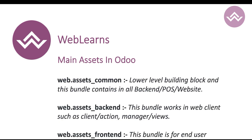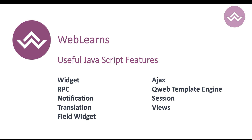There are three main types of assets available in Odoo. The first is assets_common, the second is assets_backend, and the third is assets_frontend. Common assets can be used across the entire JavaScript framework. Assets_backend is specifically for the backend JavaScript framework. Assets_frontend is specifically used for website and portal related stuff.